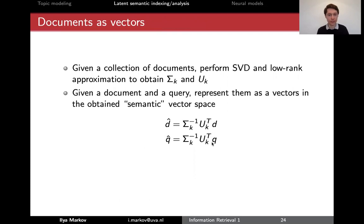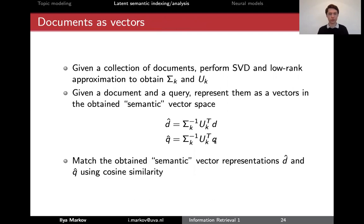When a query arrives, you also represent a query semantically. This you can pre-compute, basically. This you compute on the fly. And then you use cosine similarity to match this to semantic vectors. So that's the idea.